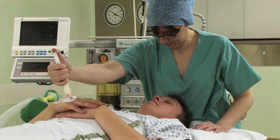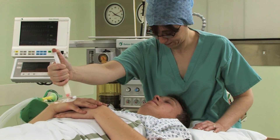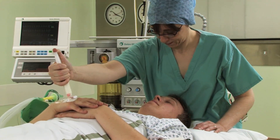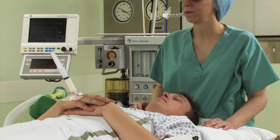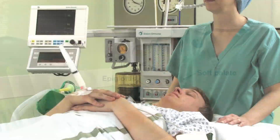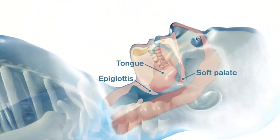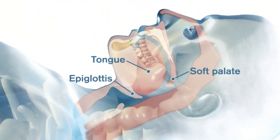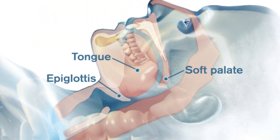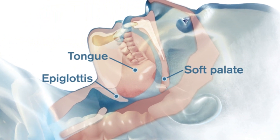In the spontaneously breathing anaesthetised patient, airway obstruction can be experienced. This is due to the anaesthetic induction agent causing the patient to experience a loss of muscular tone, causing the soft palate, tongue and epiglottis to move towards the back wall of the throat.